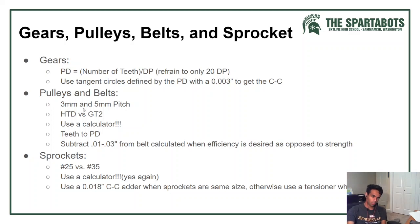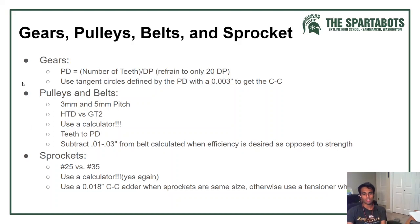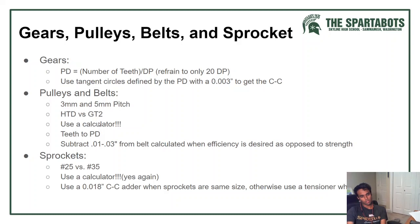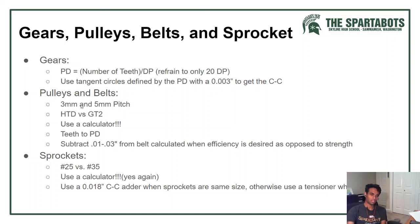For pulleys and belts, there are two main types: 3mm pitch and 5mm pitch. For 5mm we use HTD, and for 3mm we use GT2. There is a difference between these — GT2 belts have a bit more contact between the pulley and belt. Using a GT2 belt on an HTD pulley will result in less efficient power transfer, and vice versa. Try to match HTD with HTD and GT2 with GT2, though for FRC the difference is somewhat negligible.